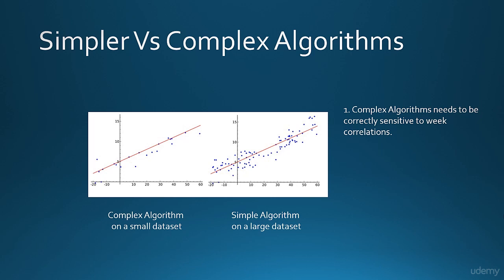However, with the larger datasets, this problem is not there. The relations between the data points would be far more accurate when the sample amount of data is huge. The algorithms can be simpler in nature and thus would be easier to code as well. On the other hand, complex algorithms are a little complicated to code and design, and data scientists would have to design complex data models considering various scenarios.